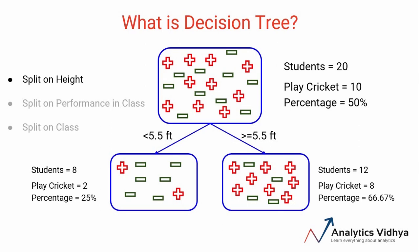Whereas there are 12 students above 5.5 feet and out of those 12 students, 8 are playing cricket and the percentage of playing cricket in this case is around 67 percent. At a broad level, the teacher is more confident while selecting students from these two groups and saying that they will play cricket or not compared to our original population.